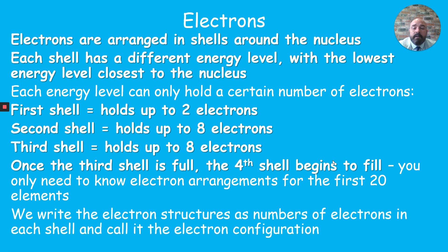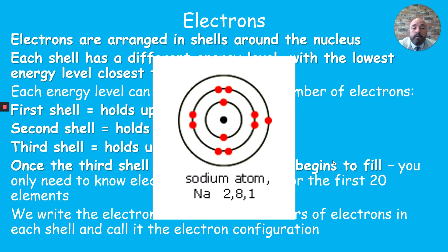We write electron structures using electron configuration — the number of electrons in each shell. Taking sodium as an example: its atomic number is 11. We place 2 electrons in the first shell (full), then 8 in the second shell (full) — that's 10. The 11th electron goes into the third shell. So sodium's electron configuration is 2, 8, 1.